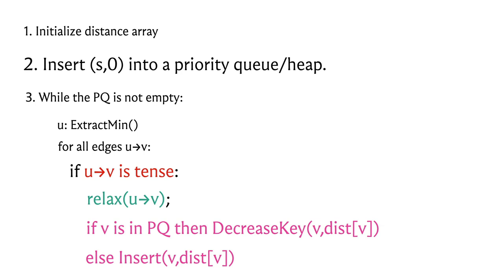It's a nice puzzle to think of adversarial examples for this version of Dijkstra's algorithm — try to engineer negative edge weights that force the algorithm to take a really long time. The worst-case running time of this version on graphs with negative weight edges is significantly worse than the worst-case running time when restricted to instances without any negative edge weights.